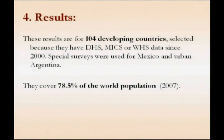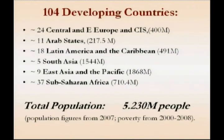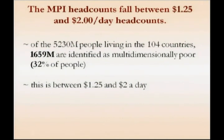I will go rather quickly through the results, as these are a first cut. It covers 104 countries, which is 78.5% of the world's population, or 5.2 billion people. Our coverage is 94% of the population in South Asia and Sub-Saharan Africa. The least well-covered region is the Arab states, where we only cover 60% of the population. We're taking the population figures all from 2007, although our surveys come from different years. At a global level, 32% — or 1.6 billion — are multidimensionally poor, a figure that sits between the $1.25 and $2 a day income poverty measure.